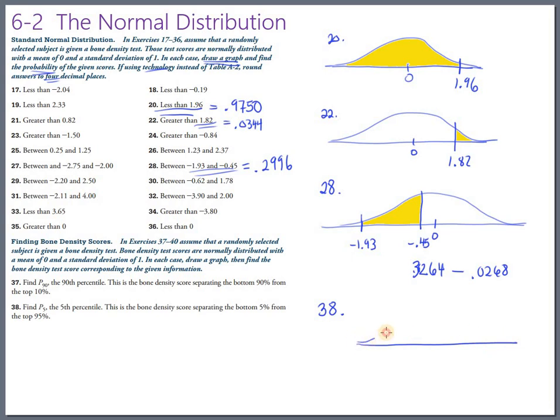And this time I know the shaded area. I know that this little. See if I can hit it. Yeah. That little bit. I know that's 5%. And the question is just what's the z-score. So this little shaded area is 5%. My question is what bone density score separates the bottom 5% from the top 95%.